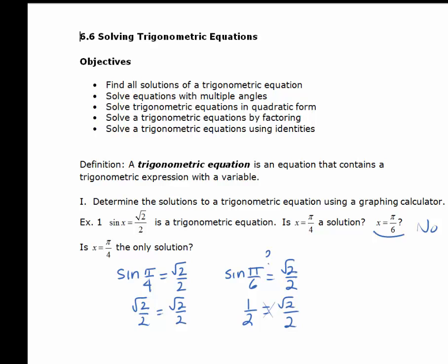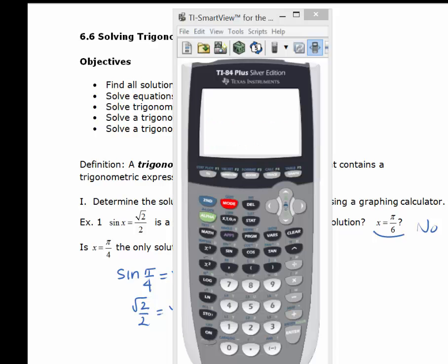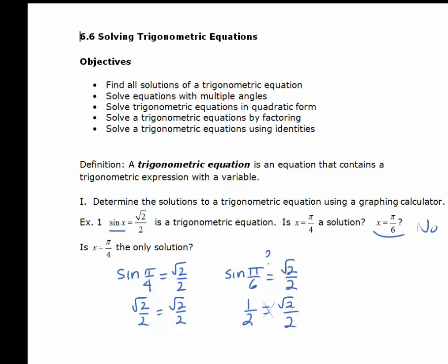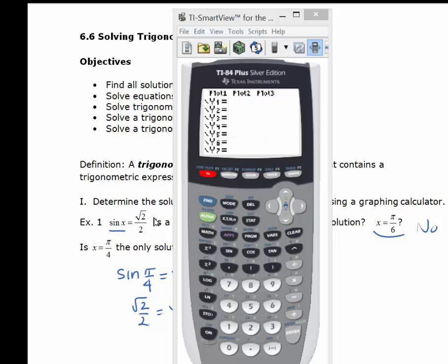In order to answer this question, before we actually go and solve a trig equation, let's look at the answer graphically. To use your graphing calculator, make sure you're in radian mode since we are dealing with radians. Go into Y= and in Y1, we're going to graph sin x. In Y2, we'll graph the square root of 2 over 2, and we'll see where they intersect. That's another way to solve an equation.